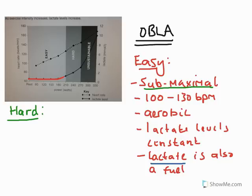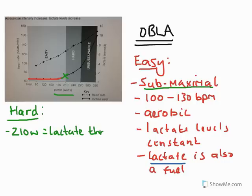What about the hard stage on the graph? Power output is increasing, so we are increasing the intensity of exercise. At 210 watts, we reach what we would call our lactate threshold — a really key term to use in your exam. The lactate threshold is the point at which lactate begins to accumulate in the blood. As exercise intensity increases at this point, blood lactate begins to accumulate above resting levels, and every increase in work rate produces an associated increase in blood lactate accumulation.